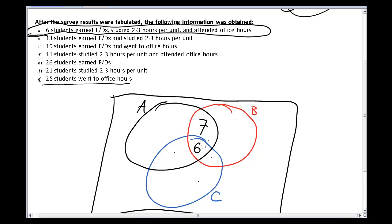Next, I've got ten students earned F and Ds and went to office hours. Now I'm talking about this area. Ten students earn Fs and Ds, so they're in region A, and they go to office hours, that makes them in region C. But again, while I've got ten people in this region as a whole, six of those people also study appropriately. And so ten minus six leaves me with only four people who are actually just going to office hours and are still having trouble in class.